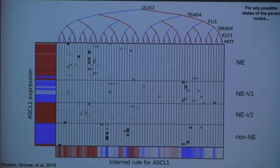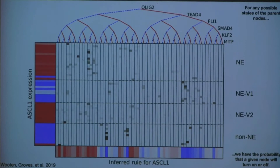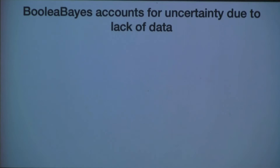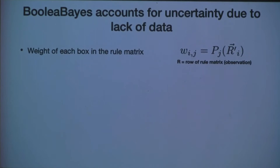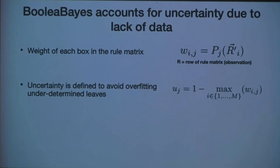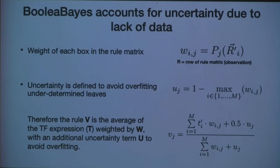For any possible state of the parent nodes, we have a probability that a given node will turn on or off — a probability at the bottom rather than zeros and ones. This allows BooleanBayes to account for uncertainty due to lack of data. The weight in each box can be represented as a probability summing to one in each row. We add an uncertainty component: one minus the max weight in each column. This helps avoid overfitting leaves that are underdetermined. The final rule is a combination of average transcription factor expression weighted by the weight, plus the additional uncertainty term U.